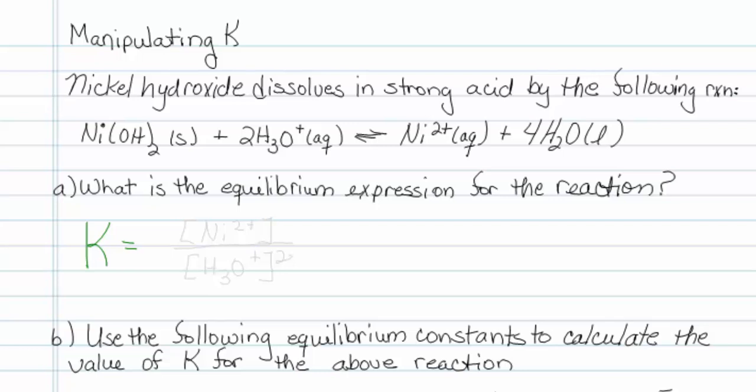So for this particular material, K would be the nickel two plus ion concentration to the first power over the hydronium concentration squared. The other materials are solid and liquid, so we won't include them.